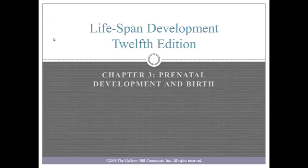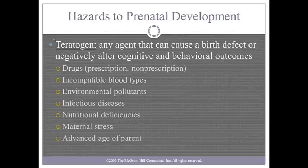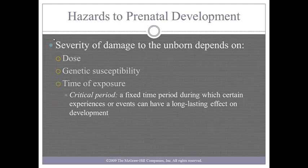Today we are going to consider hazards to the prenatal development. A teratogen is anything that causes damage, be it a birth defect or something that would negatively alter otherwise normal cognitive or behavioral outcomes during the prenatal period. Common teratogens are drugs, either prescription or non-prescription, environmental pollutants, infectious diseases, nutritional diseases, maternal stress, and an advanced age of the parent.